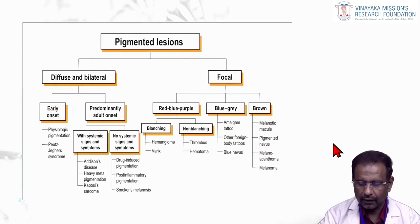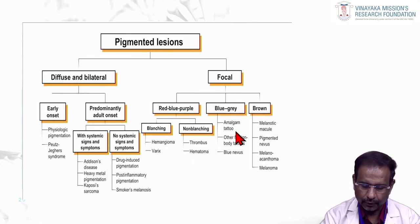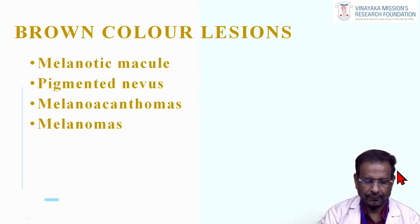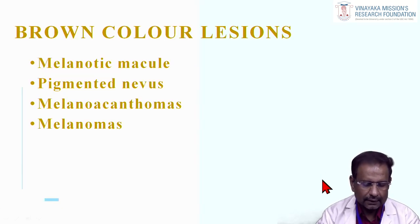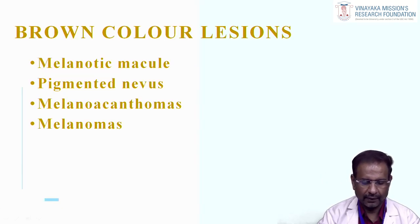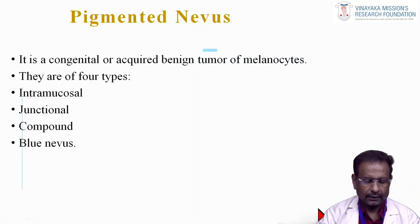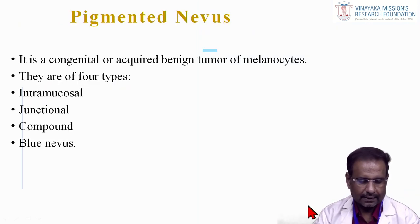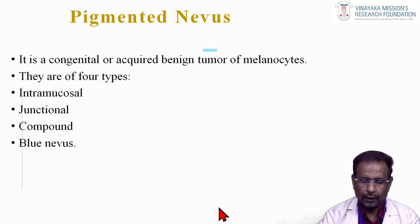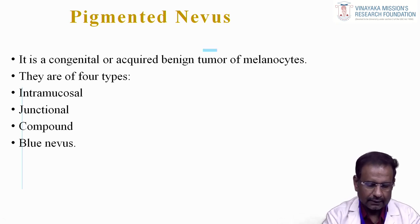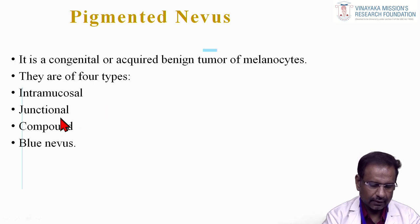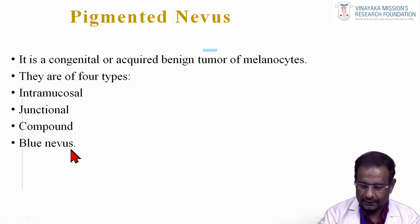Now for brown color lesions: melanotic macule, pigmented nevus, melanoacanthoma, and melanoma. Pigmented nevus is a congenital or acquired benign tumor of the melanocytes, with four types: intramucosal, junctional, compound, and blue nevus.